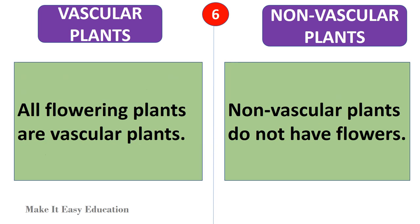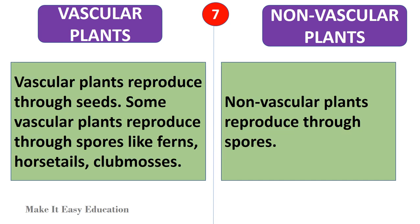All flowering plants are vascular plants; non-vascular plants do not have flowers. Vascular plants reproduce through seeds, and some vascular plants reproduce through spores like ferns, horsetails, and club mosses. Non-vascular plants reproduce through spores.